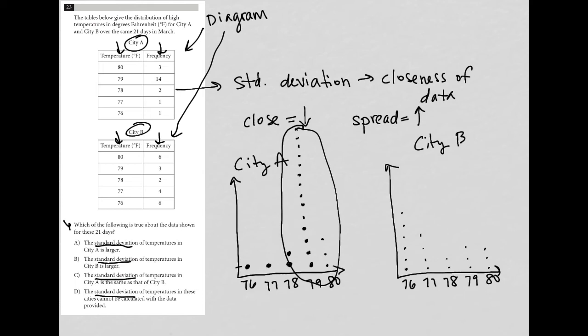80 I have six one two three four five six so where are most of the points here well they are kind of here and here right so those are more spread apart and therefore city B has a higher standard deviation